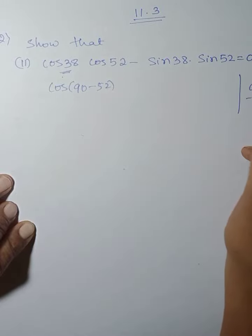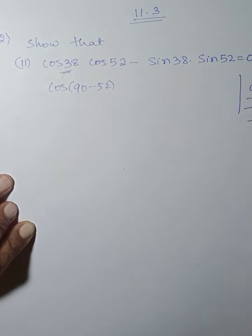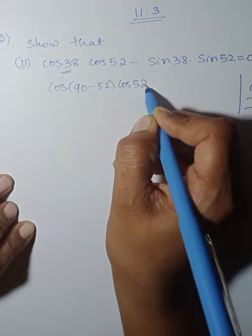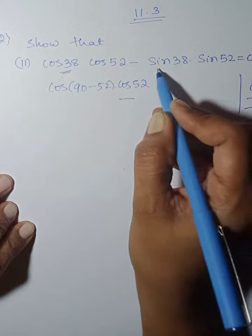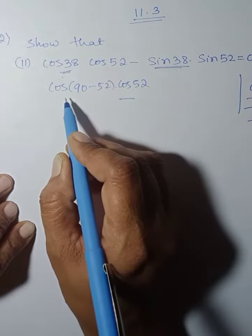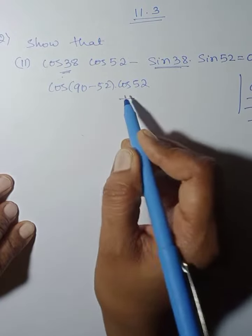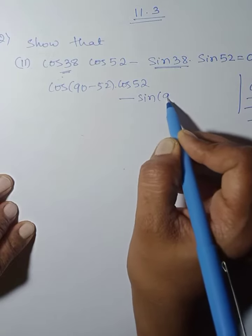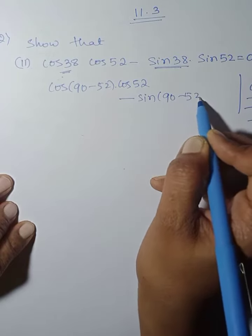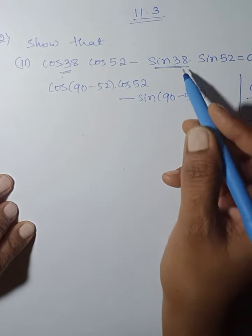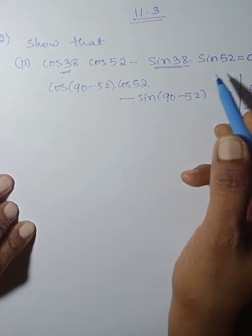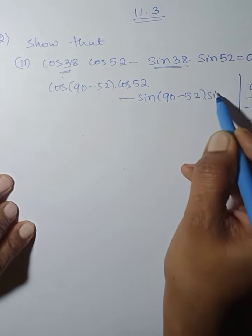90 minus 52 — obviously this is 38. So cos 52 minus sin 38: we use sin of 90 minus 52, which equals sin 38. Next, into sin 52.